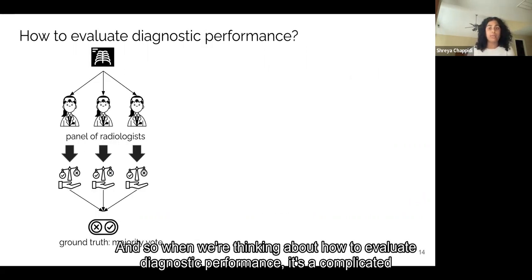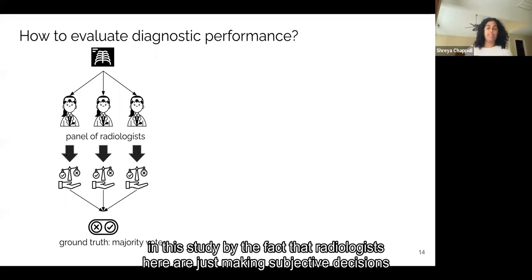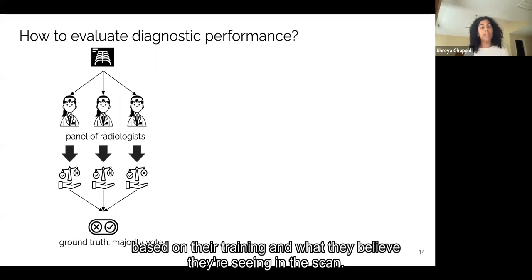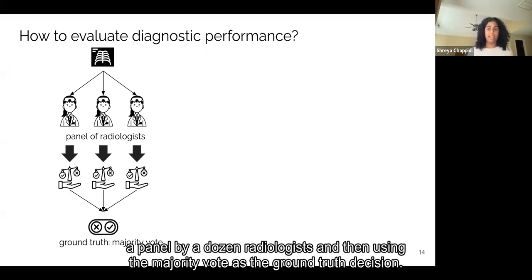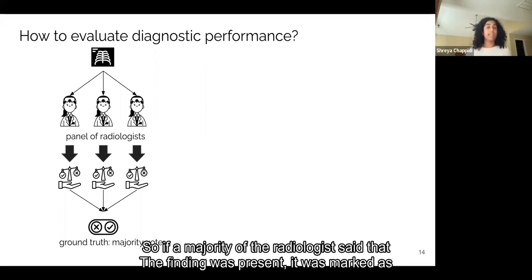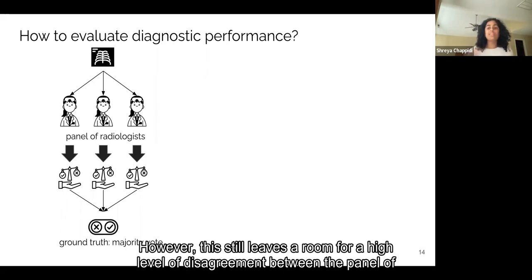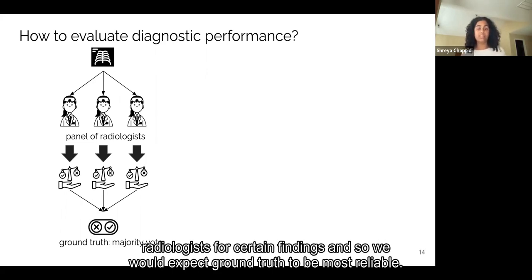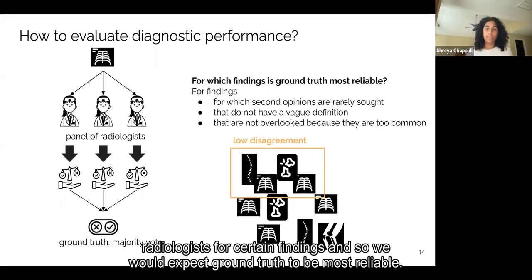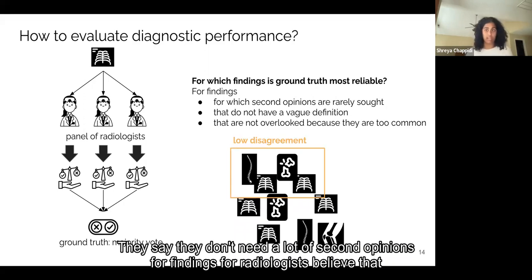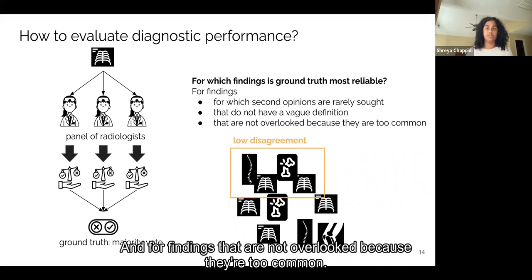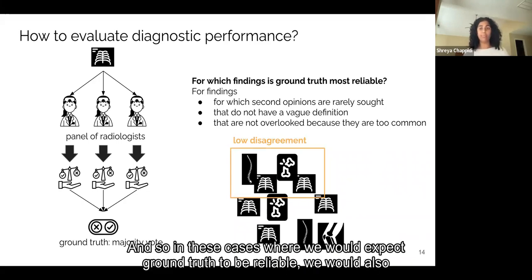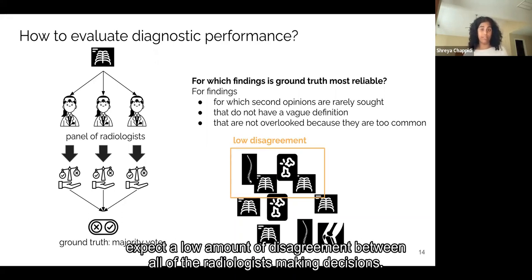And so when we're thinking about how to evaluate diagnostic performance, it's complicated in this study by the fact that radiologists here are just making subjective decisions based on their training and what they believe they're seeing in the scan. And so in this study, we ended up creating ground truth by aggregating the opinions of a panel by a dozen radiologists and then using the majority vote as a ground truth decision. So if a majority of the radiologists said that the finding was present, it was marked as present and vice versa. However, this still leaves room for a high level of disagreement between the panel of radiologists for certain findings. And so we would expect a ground truth to be most reliable for findings where they don't need a lot of second opinions, for findings where radiologists believe that the finding is well-defined and for findings that are not overlooked because they're too common. And so in these cases where we would expect ground truth to be reliable, we would also expect a low amount of disagreement between all of the radiologists making decisions.